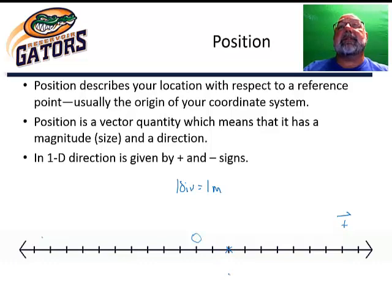Now let's say there's another object and that object happens to be at negative five meters. Its position is negative five meters. So I will go to the left of the origin five meters. So one, two, three, four, five. So our object is there at negative five meters.